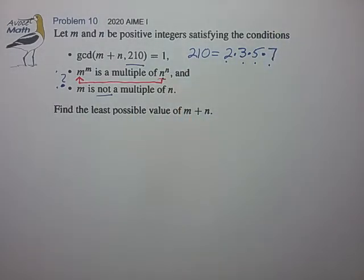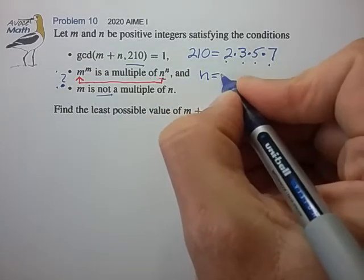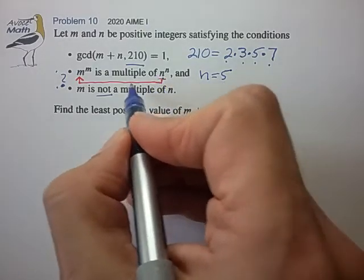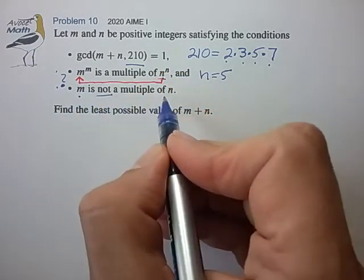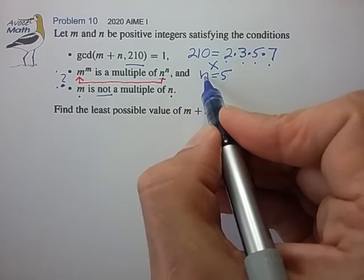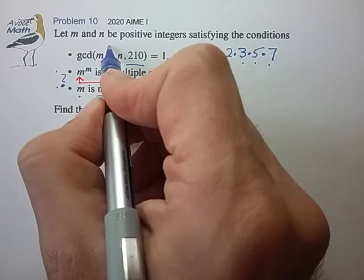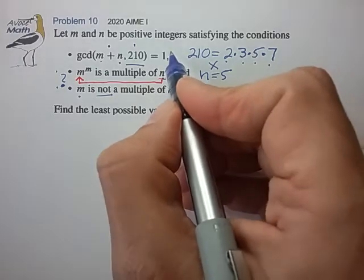Okay, so again, I'm not really sure how to grab onto this problem. So let's just try a few things to see how this works. So let's just pick a small value of n. So let's imagine n is equal to, say, perhaps 5. So if n is equal to 5, then m is going to pick up at least one factor of 5, so that m is a multiple of n. So this doesn't work. And it also has a problem that if n is 5, m picks up a factor of 5, m plus n will also have a factor of 5. And that shares a common factor with 210. So it doesn't satisfy even the first condition.